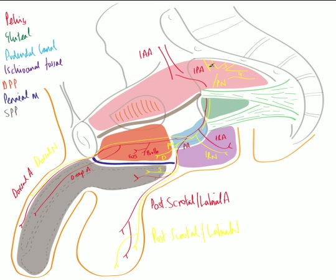In summary, the pudendal nerve from S2, S3, S4 leaves the pelvis via the greater sciatic foramen, enters the perineum via the lesser sciatic foramen, and in the pudendal canal gives rise to: the inferior rectal nerve, which passes through the ischioanal fossa to the external anal sphincter; the dorsal nerve, which courses through the deep perineal pouch to innervate the dorsum of the penis or clitoris; and the perineal nerve, which has a deep branch supplying the deep perineal pouch structures and a superficial branch supplying the superficial perineal pouch, terminating as the posterior scrotal or labial nerve. The anterior scrotum is supplied mostly by the ilioinguinal nerve.